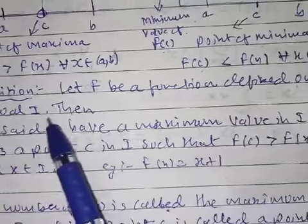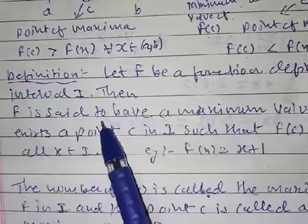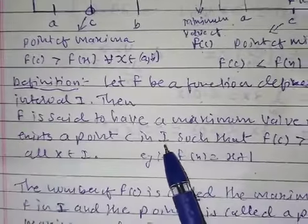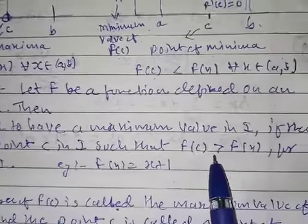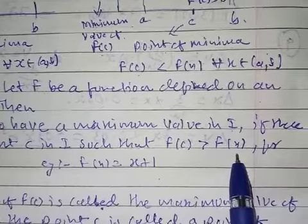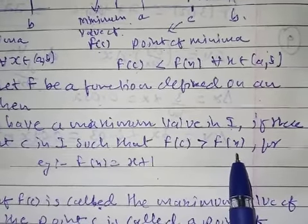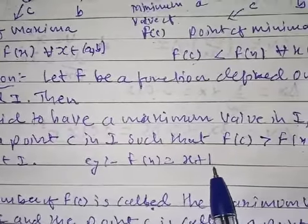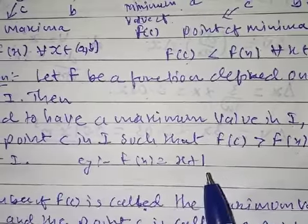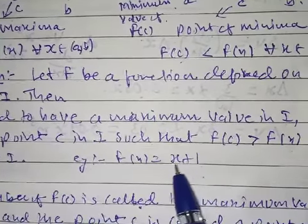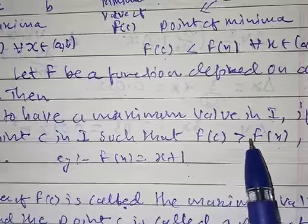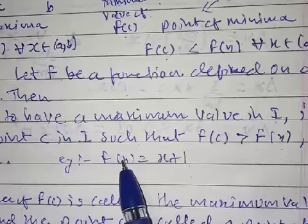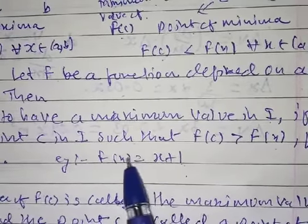Definition: Let f be a function defined on an interval I. Then f is said to have a maximum value in I if there exists a point c in I such that f(c) is greater than f(x) for all x belonging to I. For example, take f(x) = x + 1. If you take c at any point, f(c) will be greater than f(x) — if you put 1 you get 2, if you put 2 you get 3.